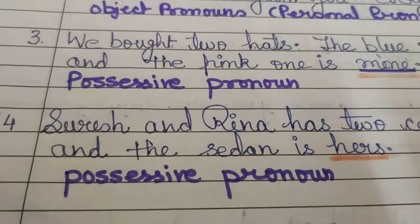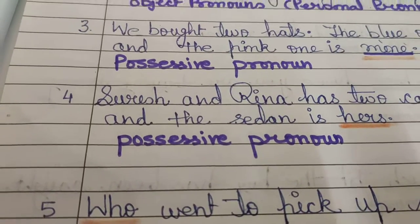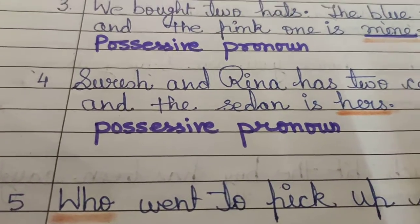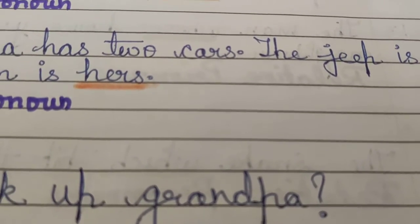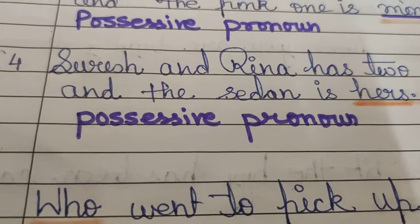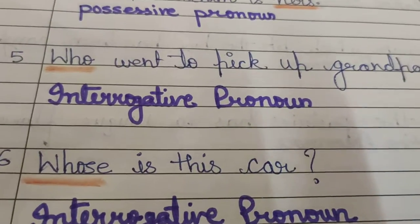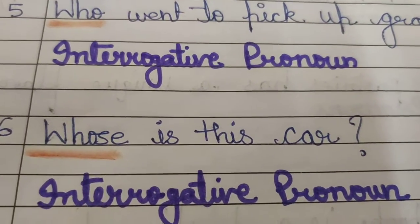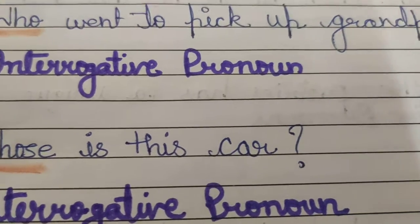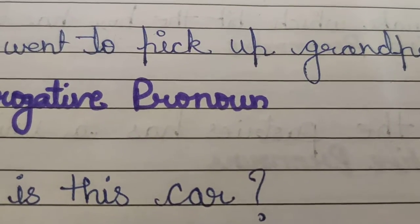Coming to the next sentence: Who went to pick up grandpa? The clue word is 'who'. But how do we know if it is an interrogative pronoun or a relative pronoun? If we focus at the end of the sentence, there is a question mark. The question mark tells us that 'who' is used as a question, and as there is no noun after 'who', it is an interrogative pronoun. Another example: Whose is this car? Again, 'whose' is in the list as an interrogative pronoun, and the question mark makes clear whether it is a relative pronoun or an interrogative pronoun.